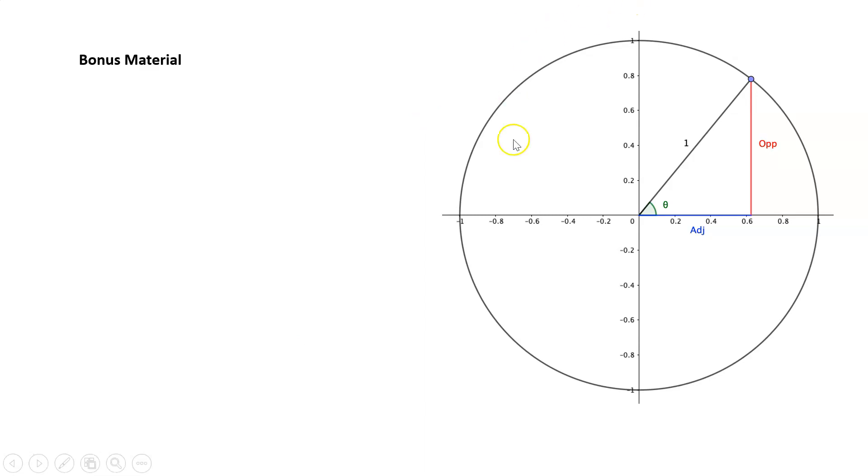This circle here has got a radius of 1, and the blue point on the circumference can move. This blue point gives us an angle of theta with the x-axis, and that theta will change as I'm moving the blue dot around. If I drop a perpendicular down onto the x-axis, that is going to be opposite the angle theta, and then my adjacent to the angle theta would be the blue line.